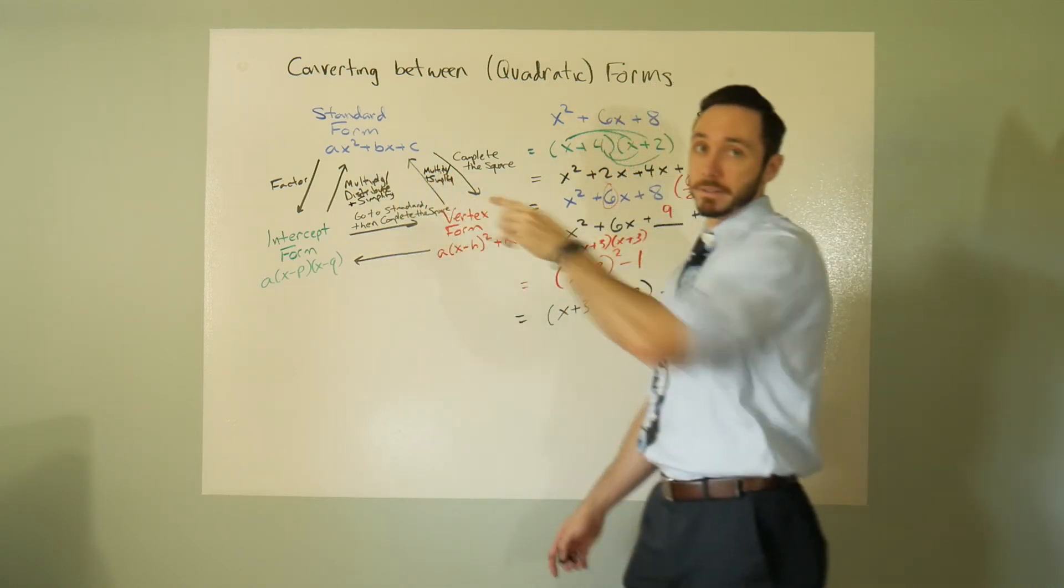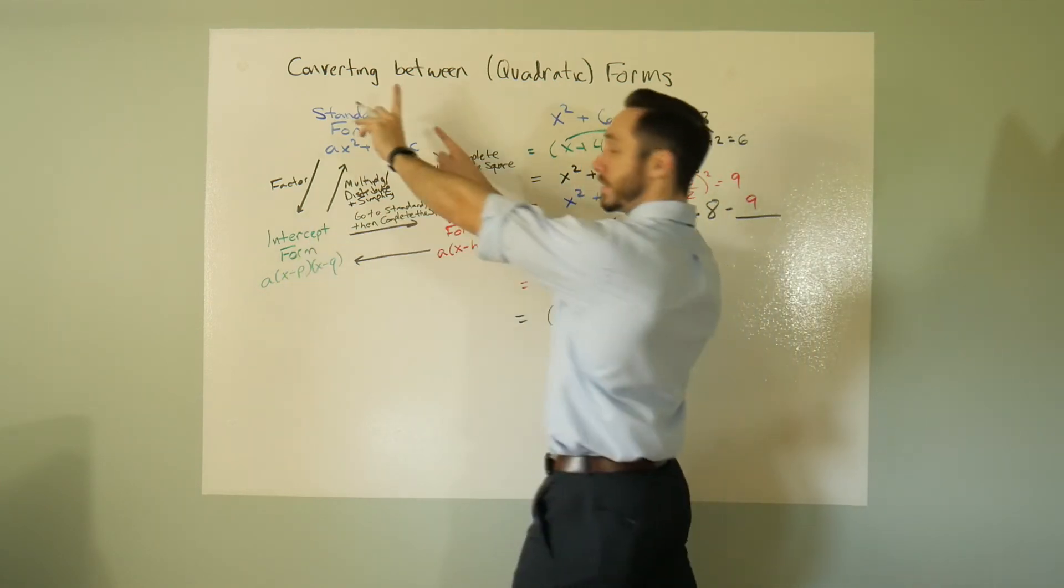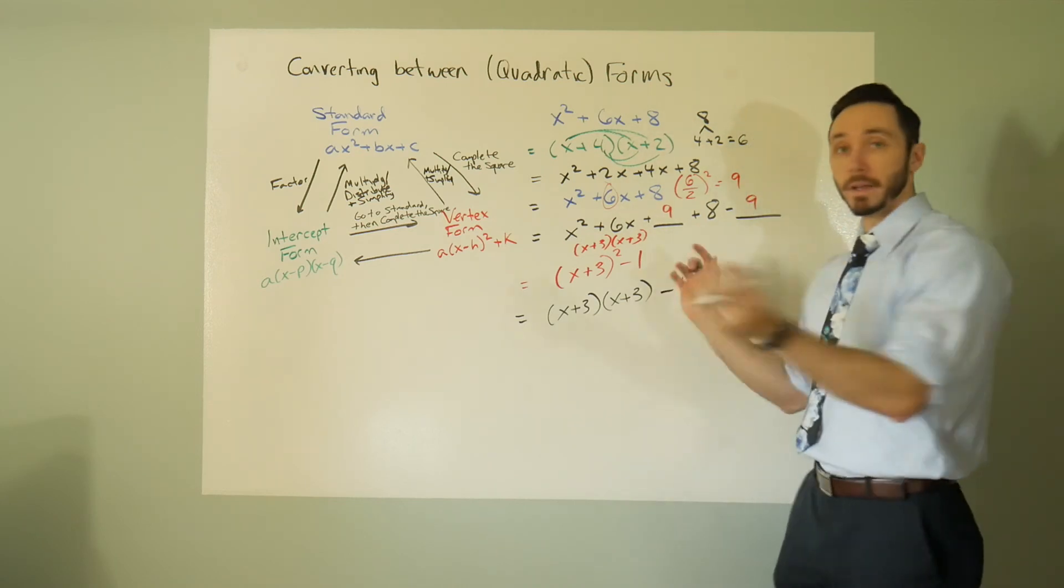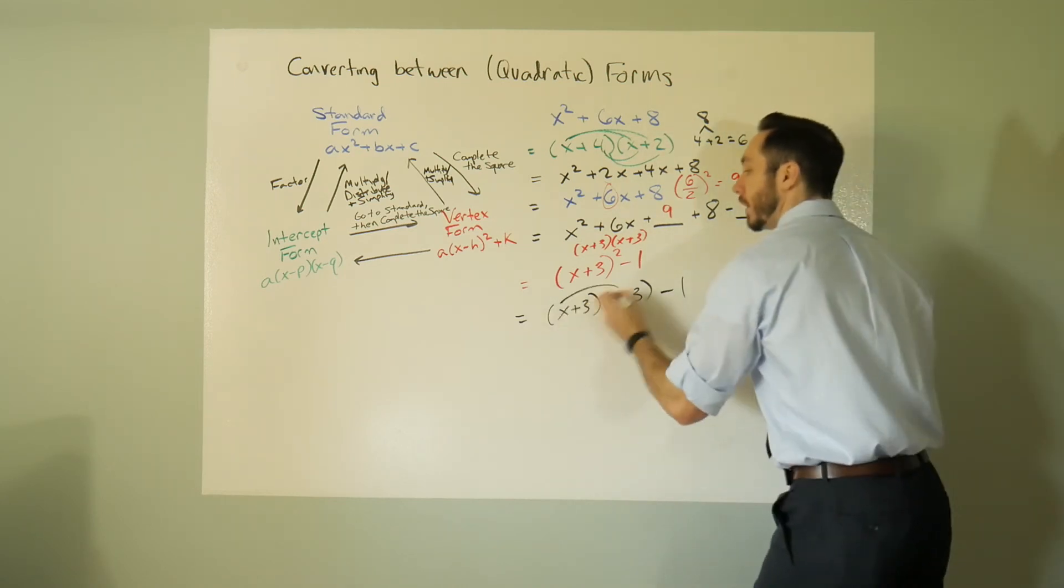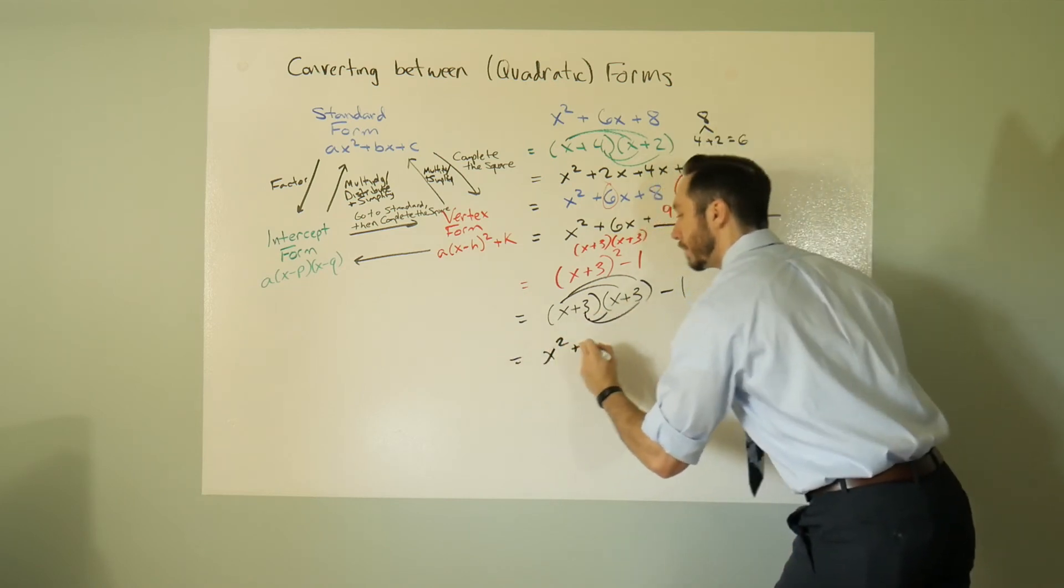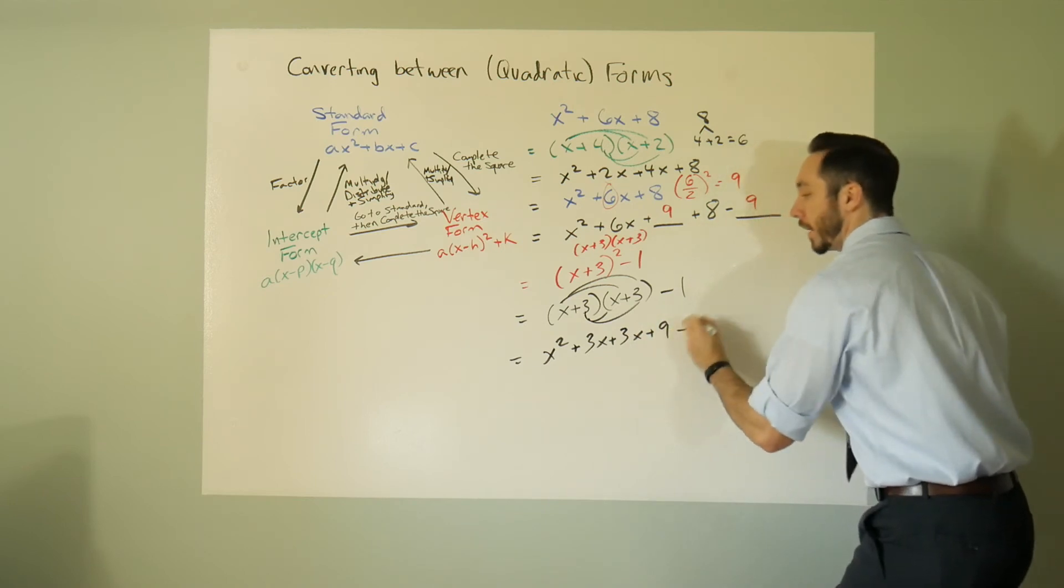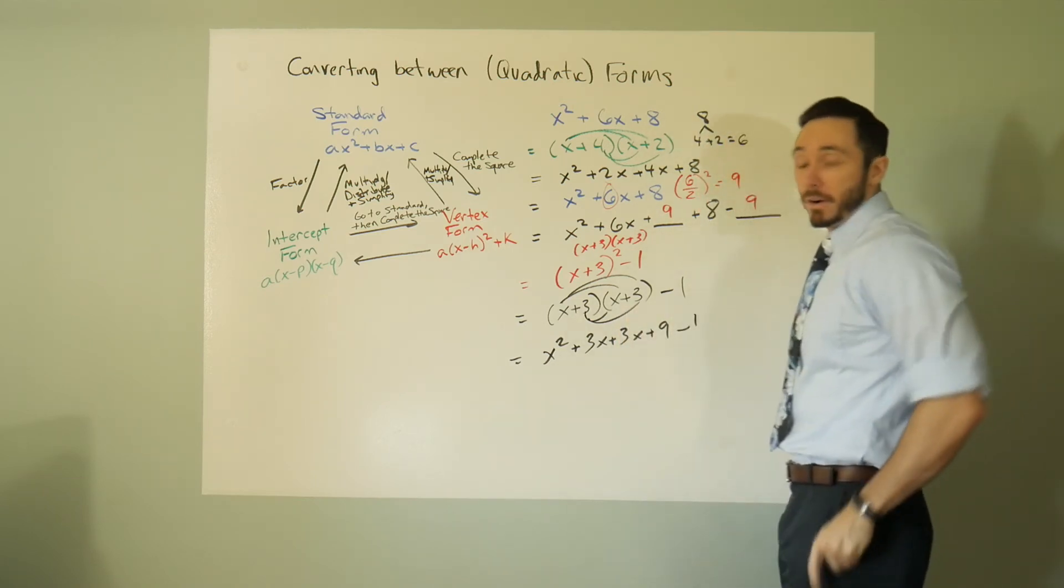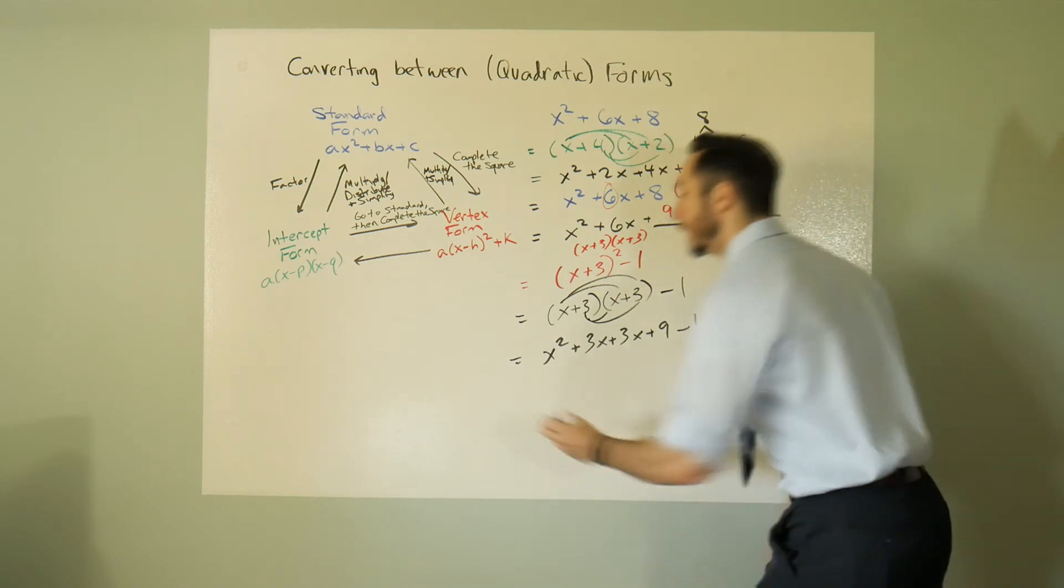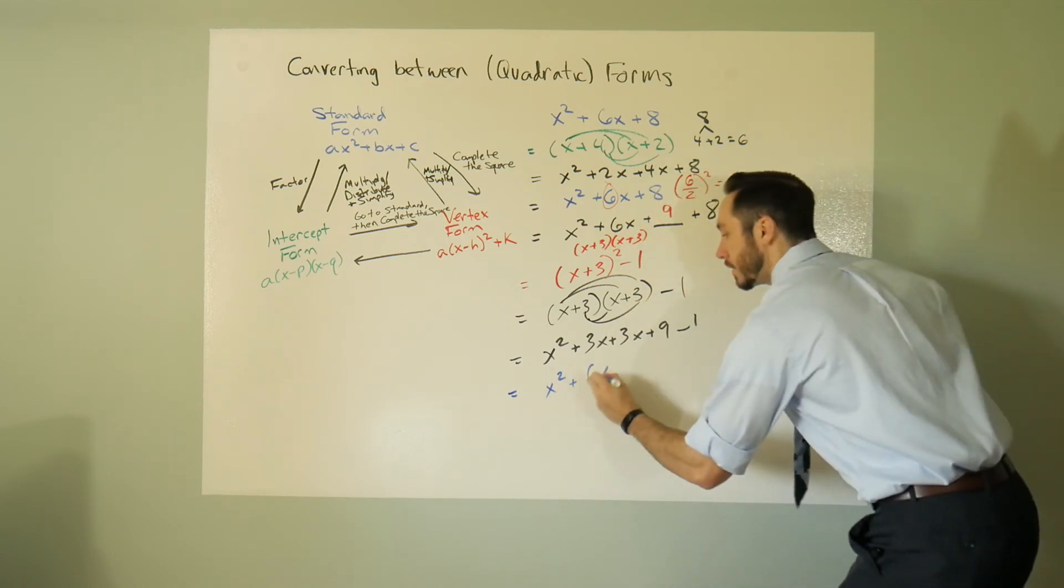So going from intercept and vertex into standard, it's just simplifying the expression. That's all it is, it's multiplying it out and simplifying. So here we get x squared plus 3x plus 3x plus 9 minus 1, bringing us back home. And this is why we teach standard form first, because it's kind of our home base form of x squared plus 6x plus 8.